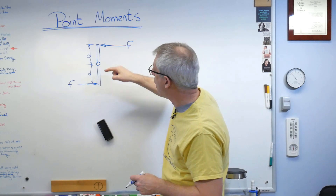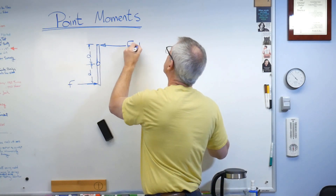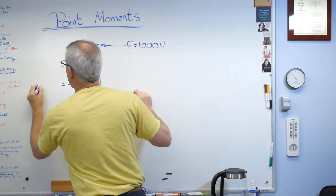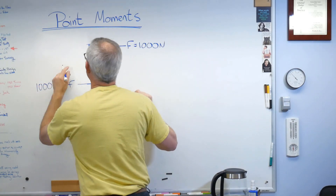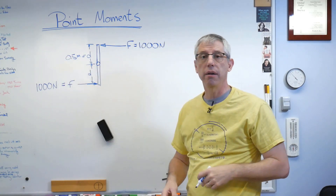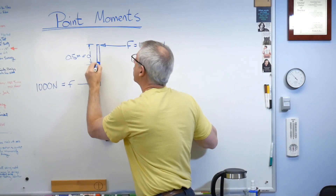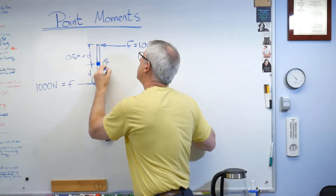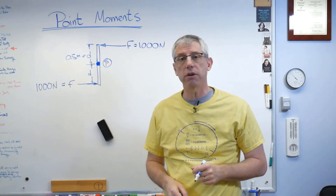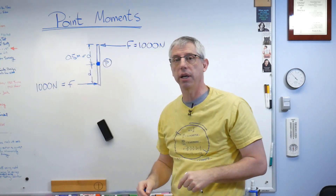Now the sum of the forces is zero. If each arm is 0.5 meters, you've got a thousand Newton meter moment about that point — let's call it P. There's a thousand Newton meter moment made with two forces acting at a perpendicular distance.